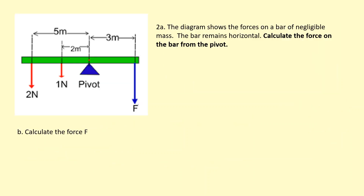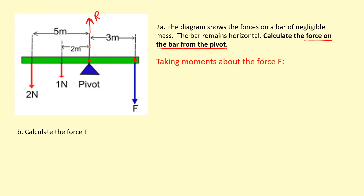Here's another typical moments question. In this case I'm not interested in F first — I'm more interested in the reaction force R at the pivot. I know that force has to be upwards because all other forces are downwards, so for the bar to remain in equilibrium R must be upward. Since I don't know F and don't care about it at this point, I'll take moments about where force F is applied, so I can ignore F.